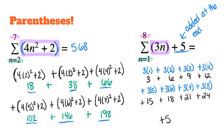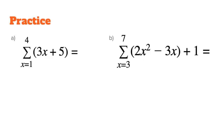Adding 3, 6, 9, 12, 15, 18, 21, and 24 gives 108. Then adding the 5 at the end gives a grand total of 113. Let's take a look at some more examples with the use of parentheses — practice identifying what you need to start with, where you end, and where your parentheses are within the argument.